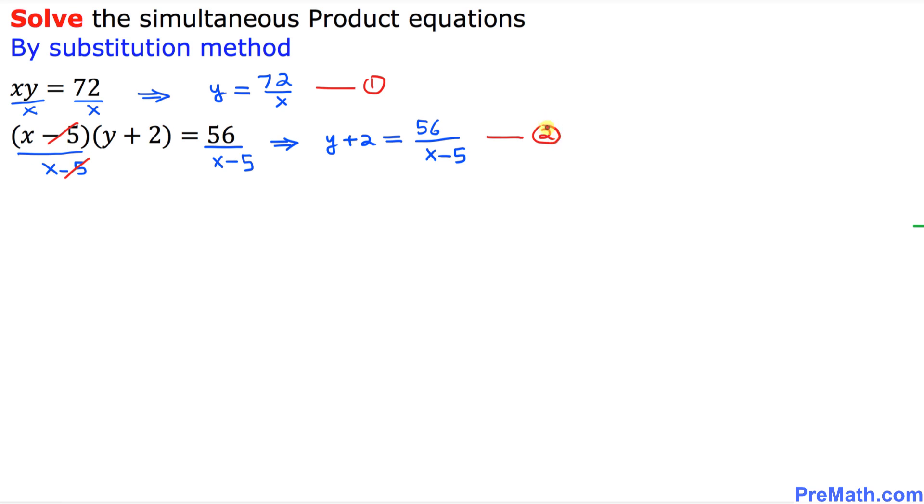I am going to call this equation number 2. And now in the next step, I am going to substitute y equal to 72 over x in equation 1 into this equation number 2 right up here. So wherever you see y, I am going to replace it by 72 over x. So let's see what happens. So y plus 2 is going to simply become 72 over x plus 2 equal to 56 divided by x minus 5. You see this, y becomes 72 over x.